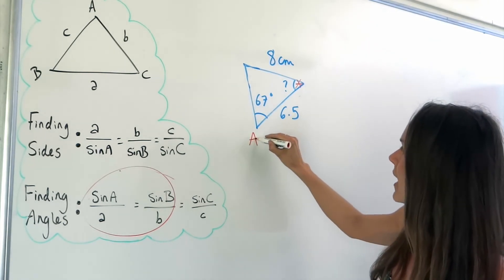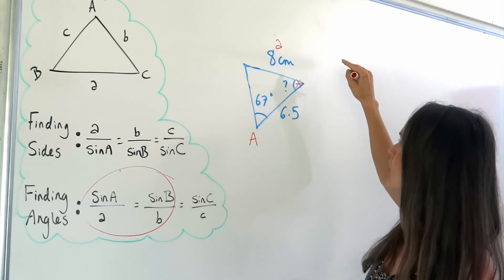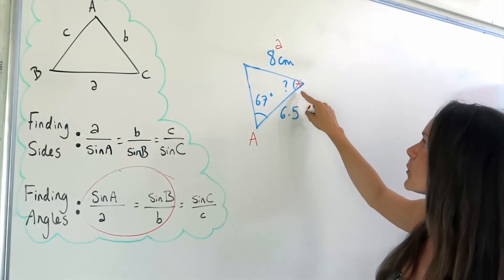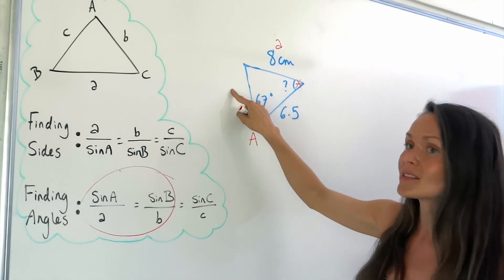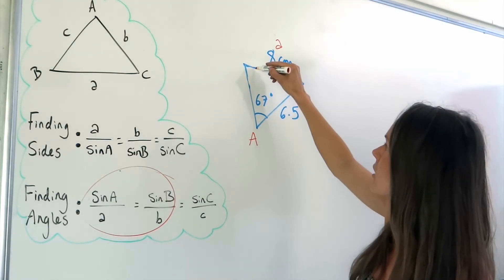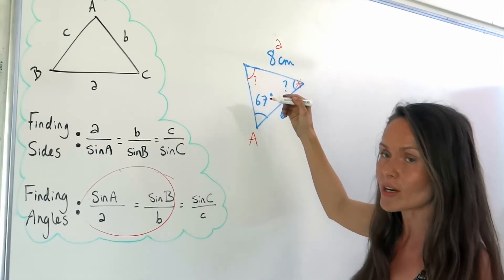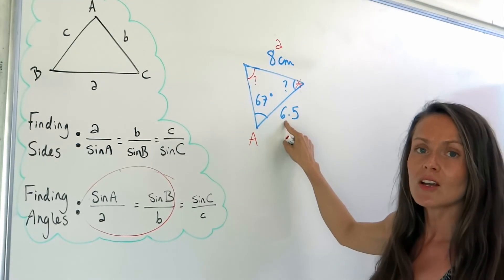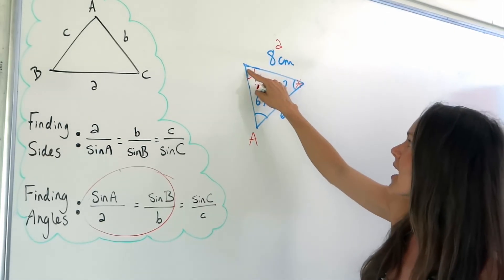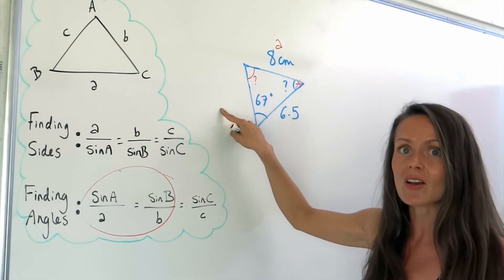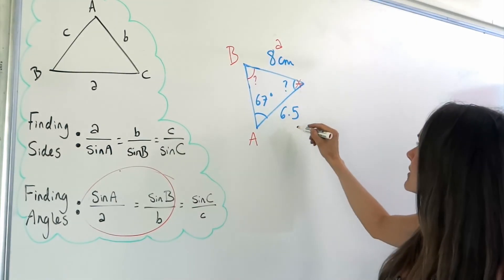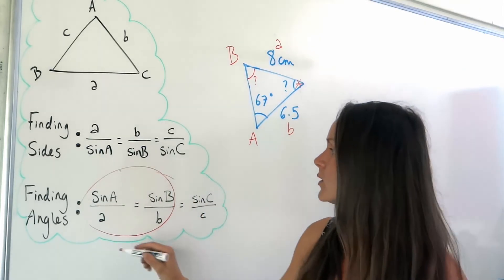Start by labelling the diagram: call this angle A, so that must be side A. We can't immediately find the unknown angle at the top because we don't know the side opposite it. So we first work out angle B, because we do know its opposite side. I'll label this angle B and this is side B. Using A and B, jot that down and substitute everything in.